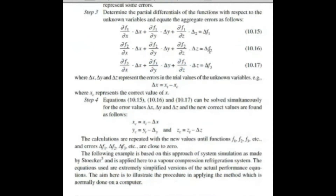Now you have three new equations again. Solve simultaneously for delta x, delta y, and delta z. From those values you can find the corrected value — for example, x_corrected equals the initially assumed trial value minus the error value. Similarly for y and z.